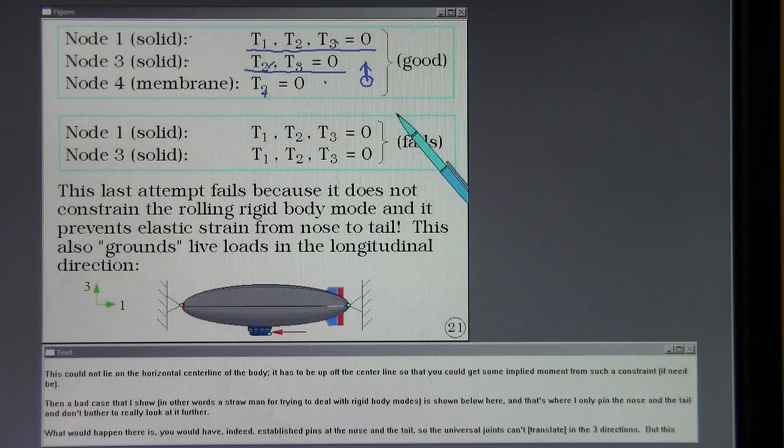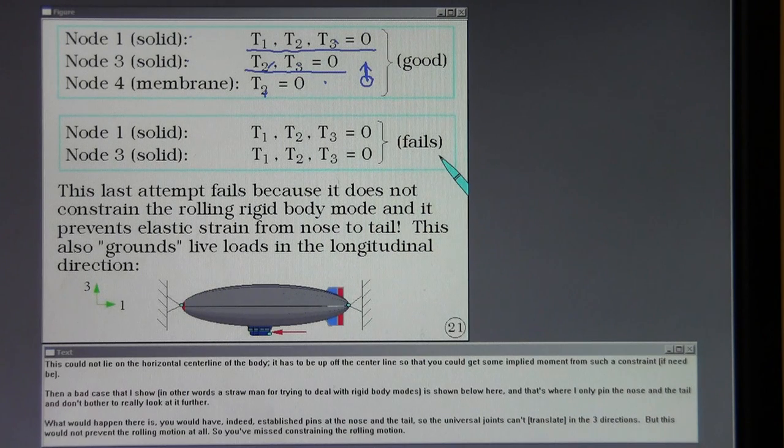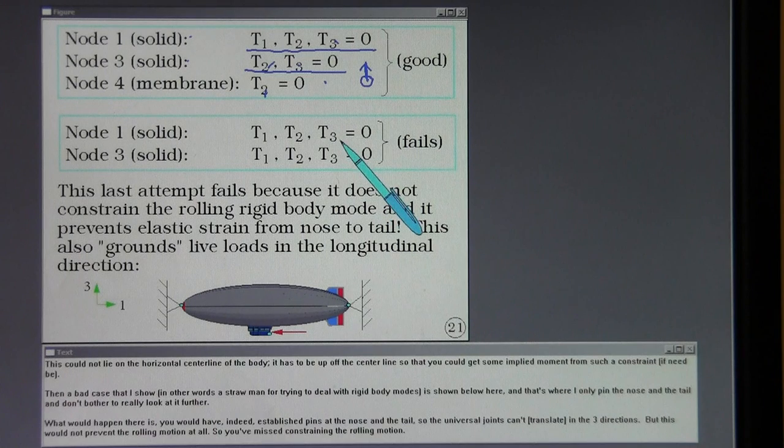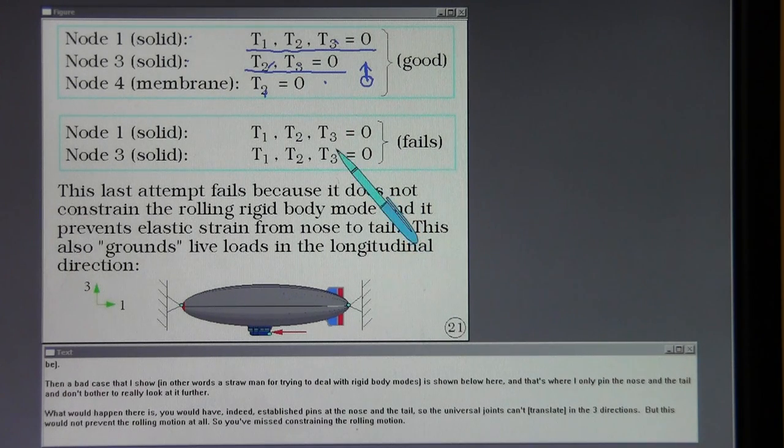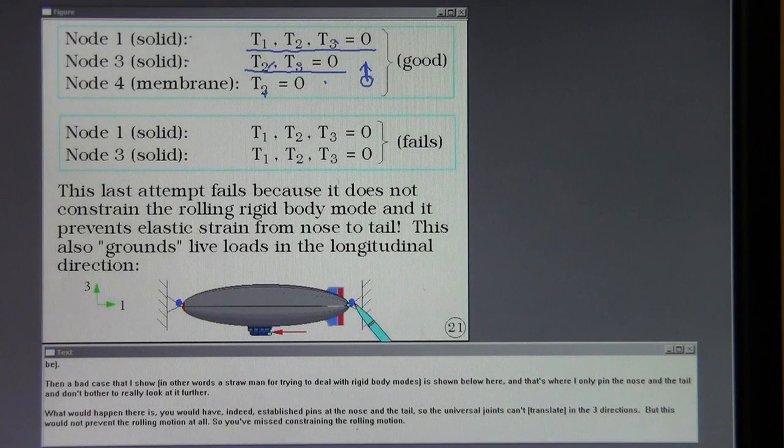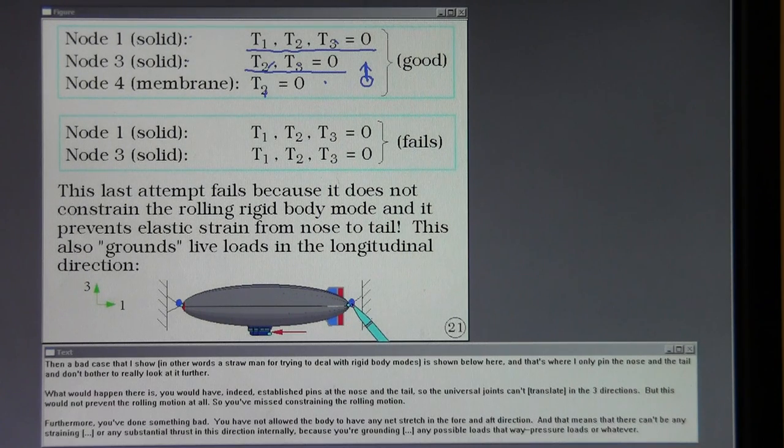Then a bad case that I show, in other words a straw man for trying to deal with rigid body modes, is shown below here. And that's where I only pin the nose and the tail and don't bother to really look at it further. What would happen there is you would have indeed established pins at the nose and the tail, sort of universal joints that can't move in the three directions. But this would not prevent the rolling motion at all. So you've missed constraining the rolling motion.